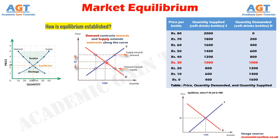Demand contracts because at the higher price, the income effect and substitution effect combine to discourage demand. Demand extends at lower prices because the income and substitution effects combine to encourage demand. In terms of supply, higher prices encourage supply given the supplier's expectation of higher revenue and profits, and hence higher prices reduce the opportunity cost of supplying more. Lower prices discourage supply because of the increased opportunity cost of supplying more, which relates to the possible alternative uses of the factors of production.